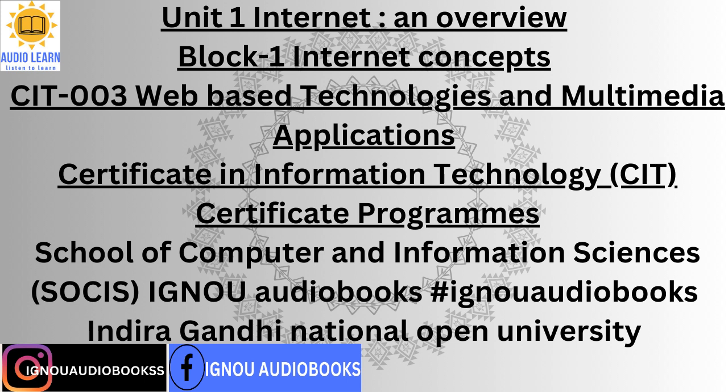The nature of the Internet changed suddenly in 1992, when the U.S. government began pulling out of network management and commercial entities offered Internet access to the public for the first time. This change in focus marked the beginning of the Internet's amazing expansion. By 1996, usage of the word Internet had become commonplace. During the 1990s, it was estimated that the Internet grew by 100% per year.